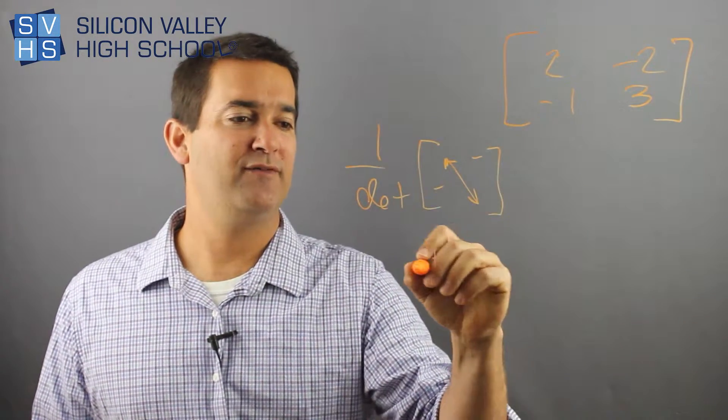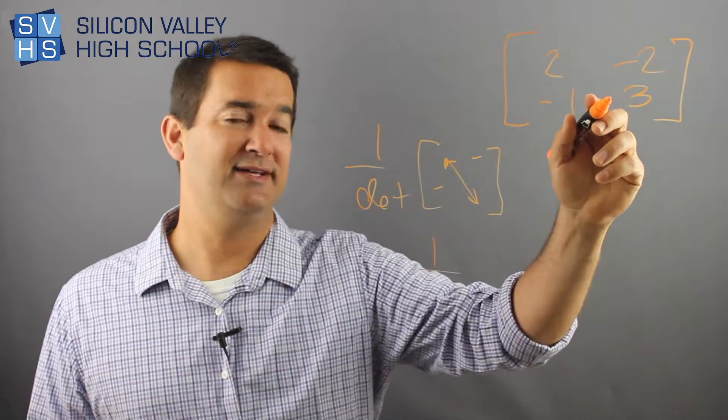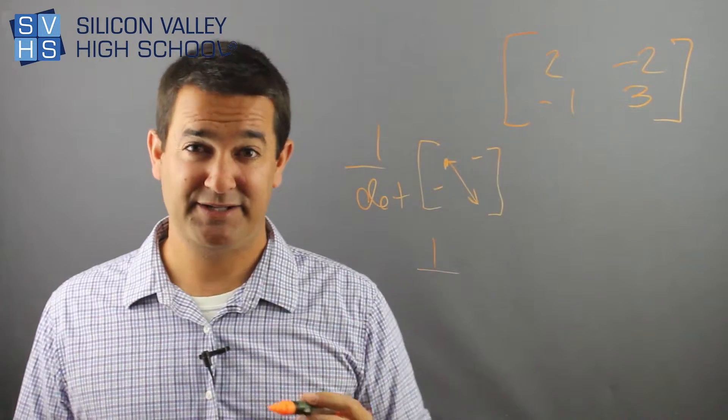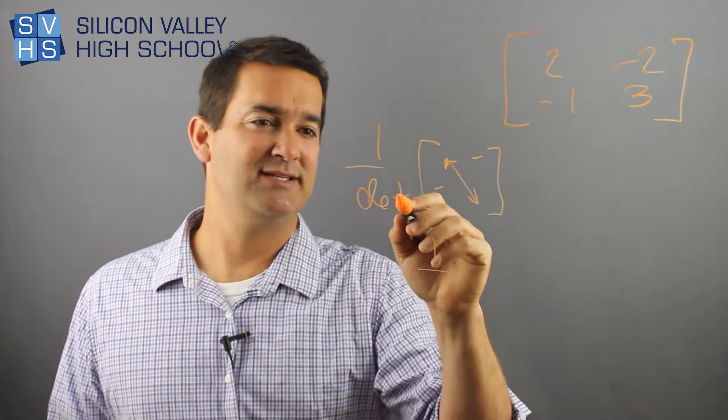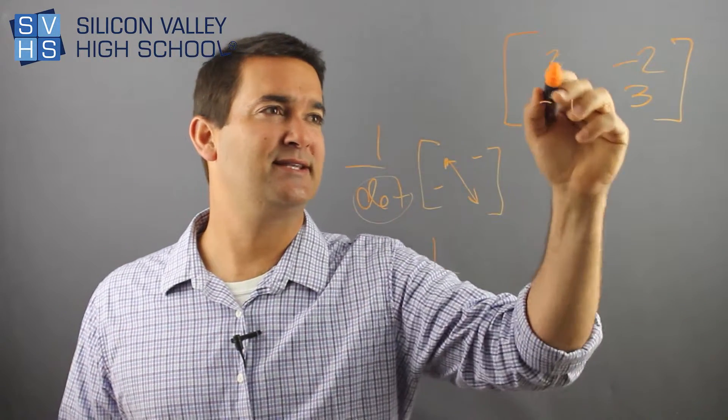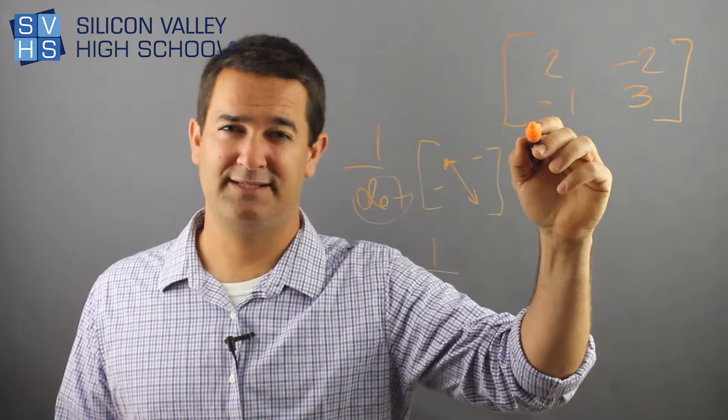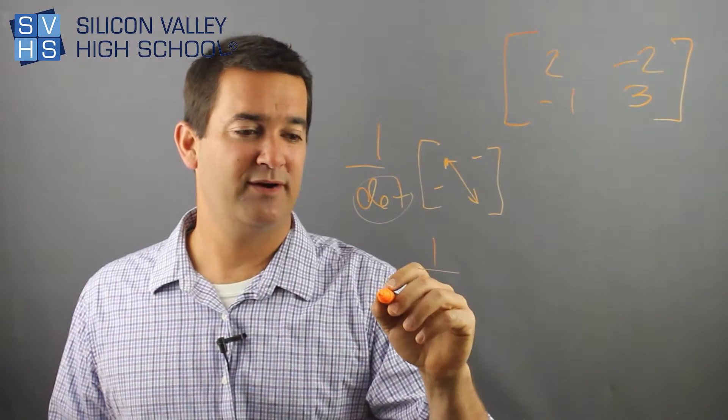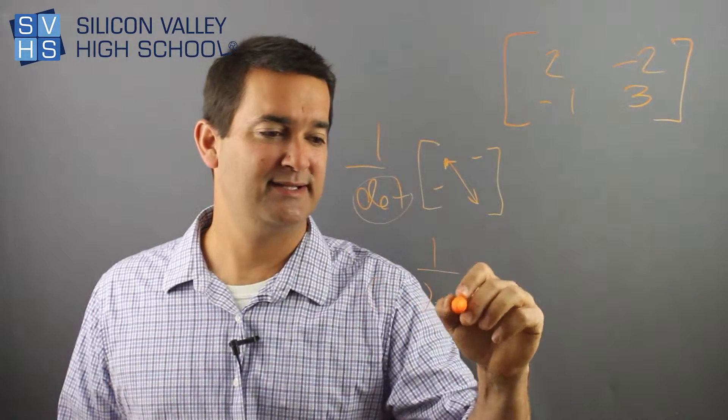So the first part, 1 over det, that's the determinant of this. And the way you find that for a 2x2, if you remember, it's probably a different video I'll do, is this number here is this times this minus this times this, right? So 1 over this times this minus this times this.